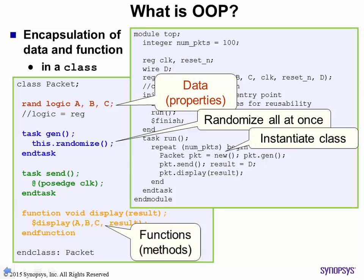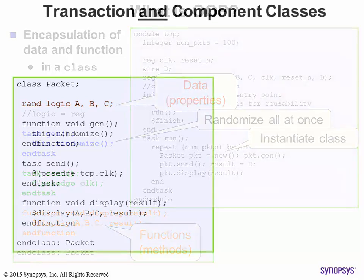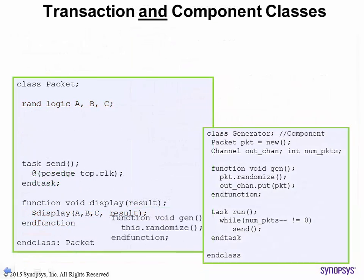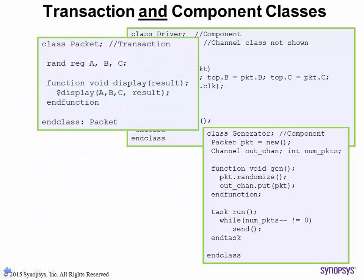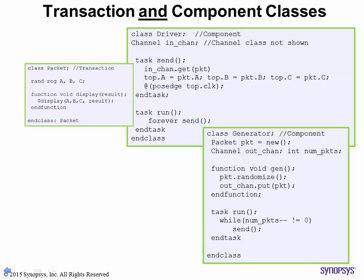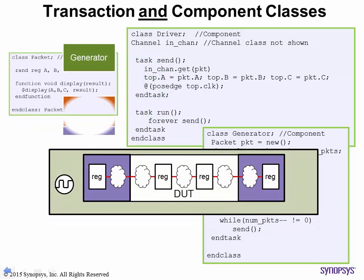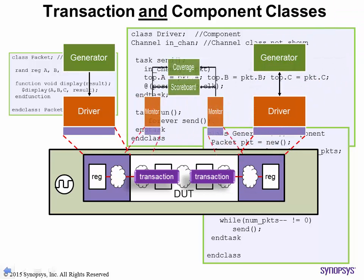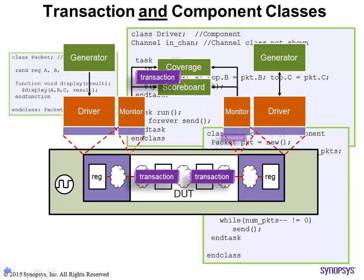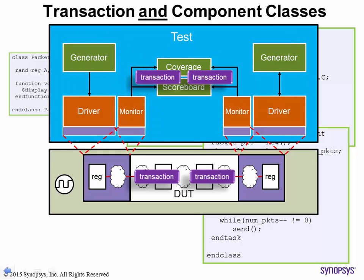The data members of the class are called properties and the tasks and functions are called methods. Just as you would break up the functionality of your design into separate reusable modules that combine related behavior, you can do the same with classes. In fact, both the transaction protocol and components can be encapsulated into different classes. Now you can instantiate component objects in your test, which can instantiate and process transaction objects. This constitutes your test.